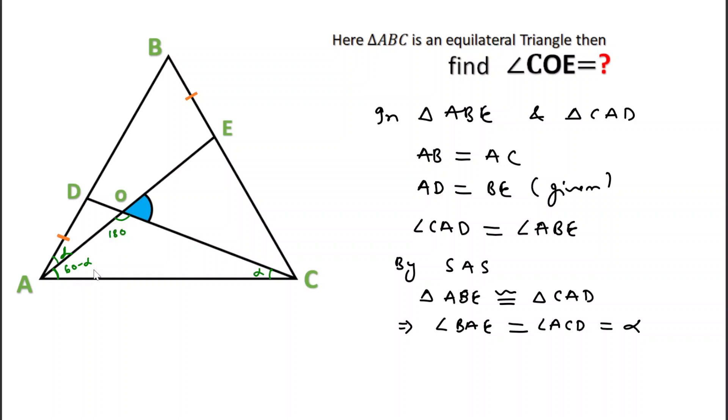60 plus alpha, which is equal to 120 degrees. So this angle will be 120 degrees. And this total will be 180 by straight line property, because in a straight line total angle is 180 degrees.